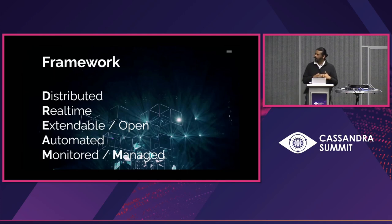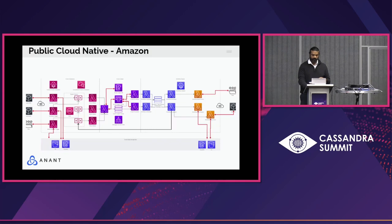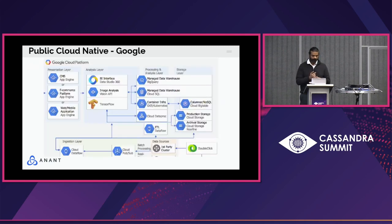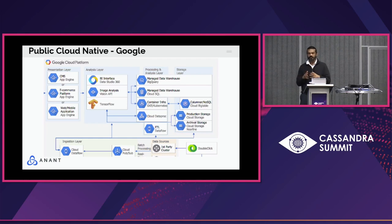In our framework we go through a simple checklist: is it distributed, is it real-time, is it extendable or open, is it automated, and can it be monitored or managed? You can do an architecture on Amazon, Microsoft Azure, or Google public cloud — are they all distributed? Yes. Real-time? Yes. Extendable? Yes. Automatable? Yes. Manageable? Yes. So being a distributed platform does not mean you have to use open source, but the case I'm making is you should look at open source as a priority, because you get more freedoms when you're using open source.